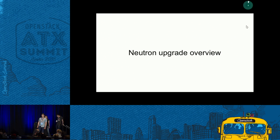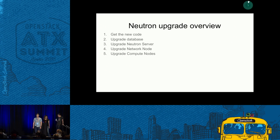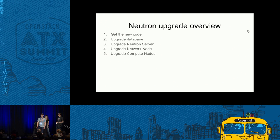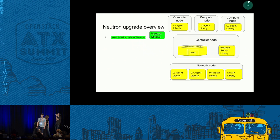For a starter, I would like to present the upgrade process overview. The upgrade process consists of a few steps: first, getting the new code; then upgrading the database; then upgrading the Neutron server; then upgrading the Neutron node and network node; and at the end, the compute nodes one by one.